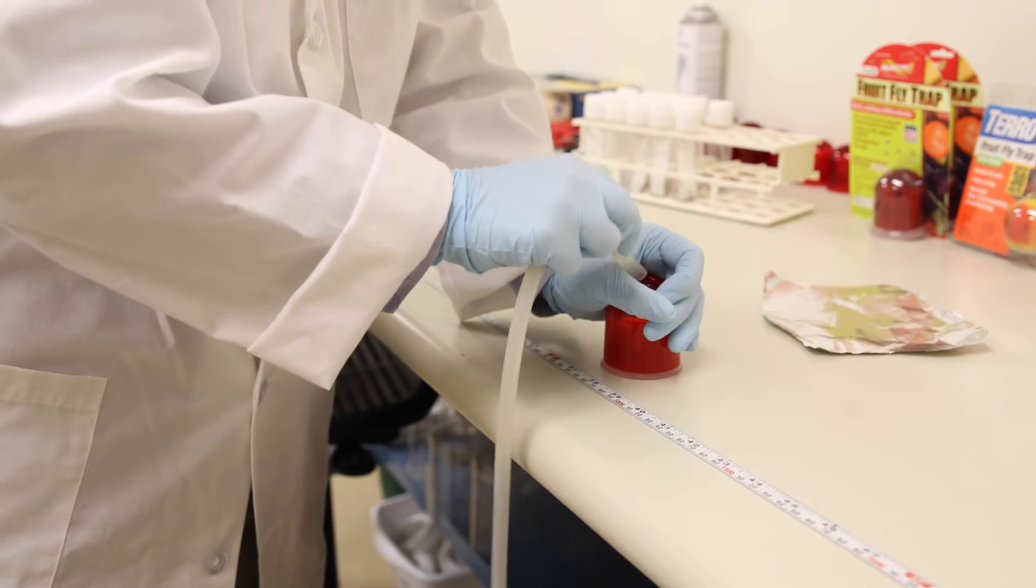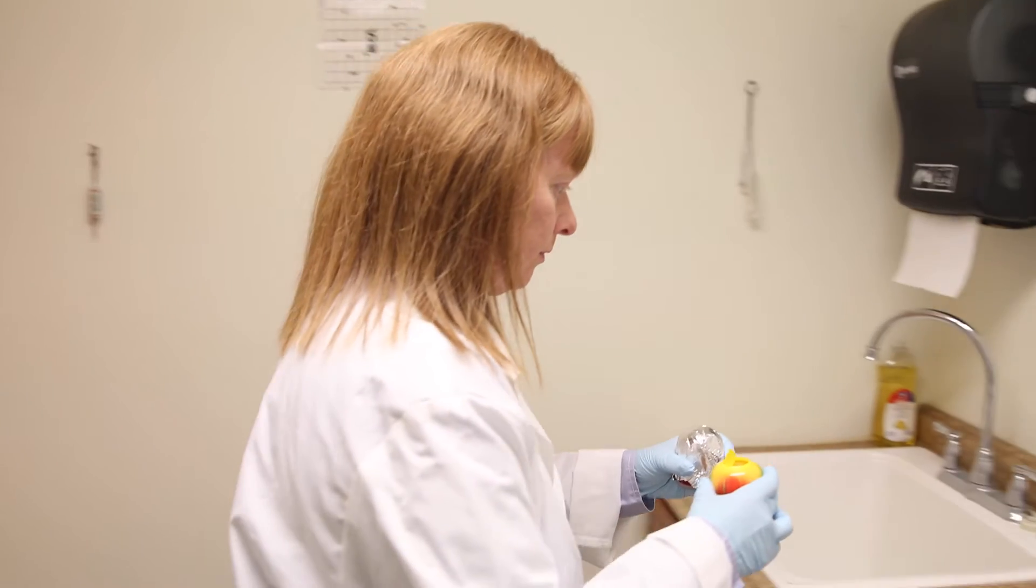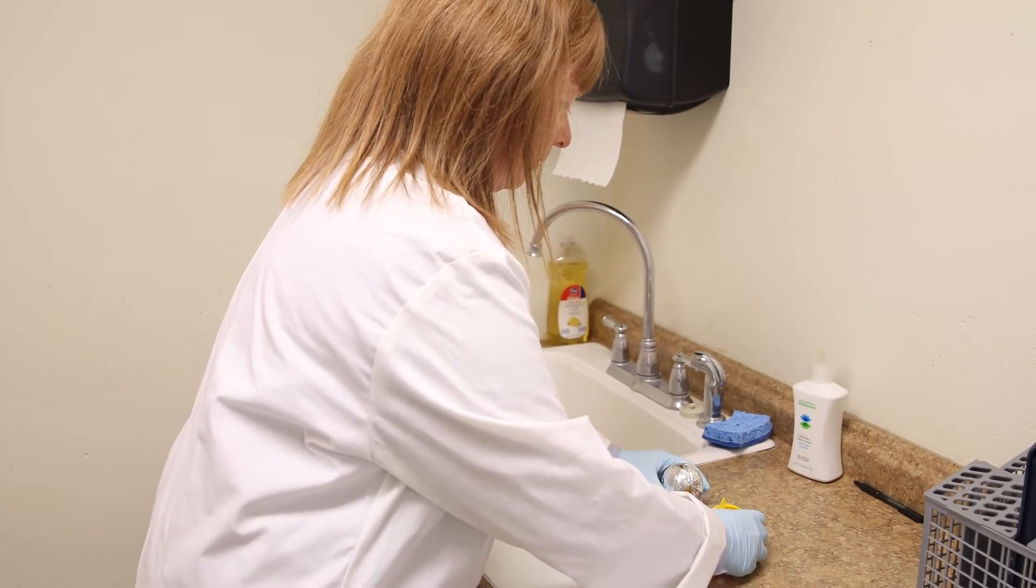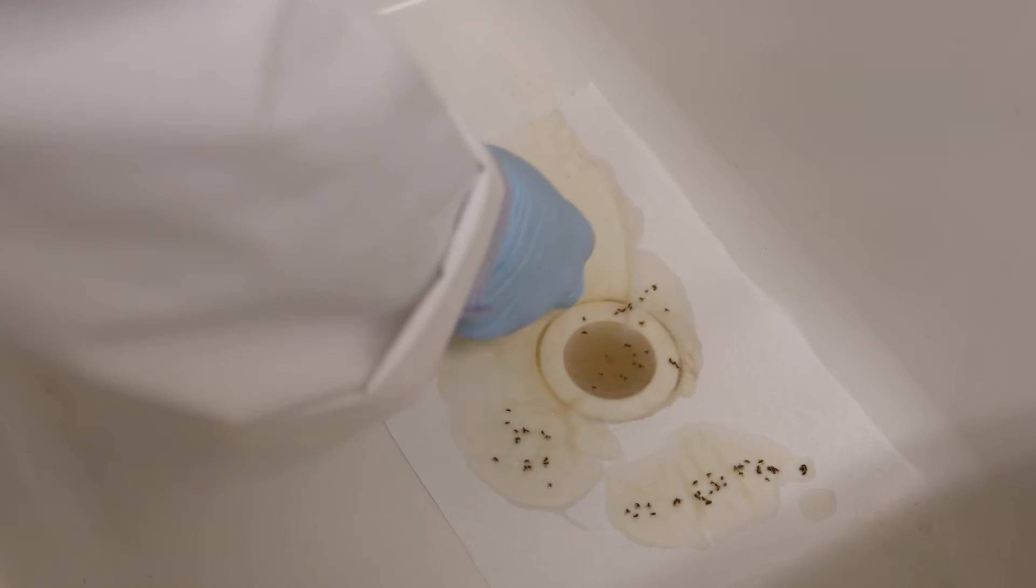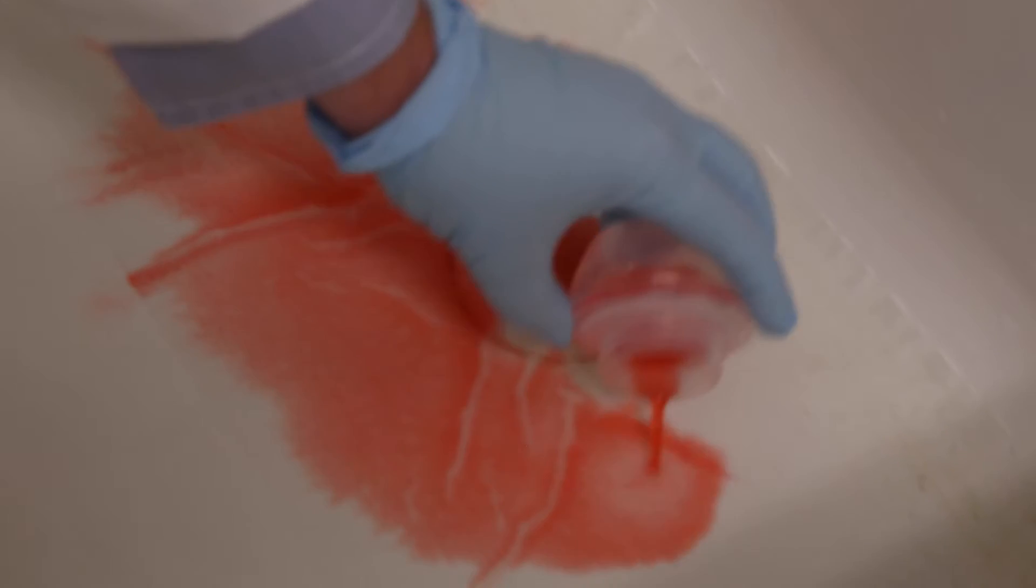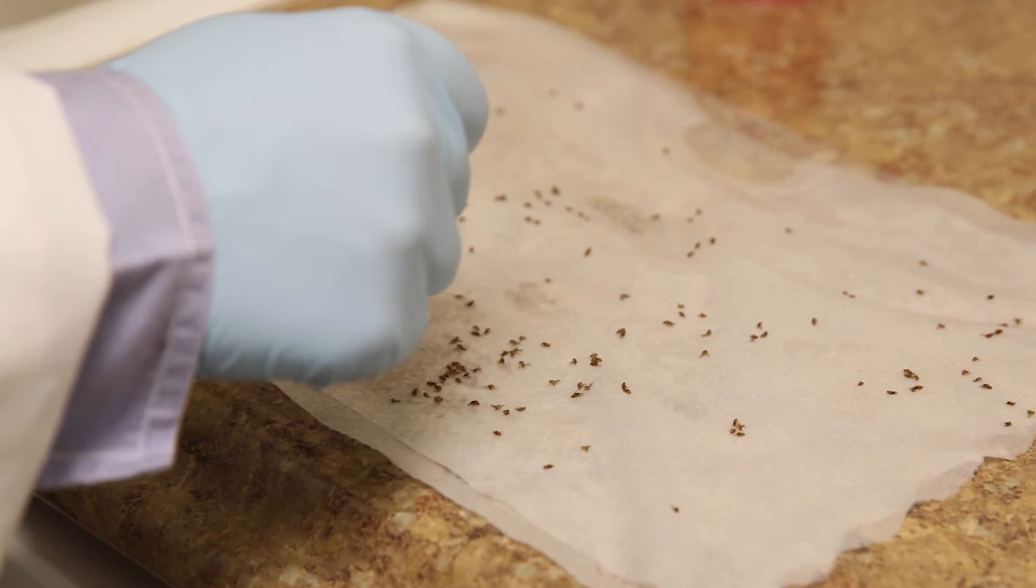At the conclusion of testing, the traps were removed and the fruit flies were knocked down with CO2. These traps were then taken into another room and dumped onto a paper towel in the sink so the fruit flies could be counted.